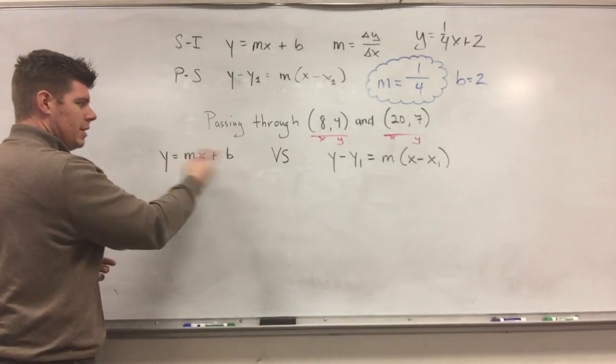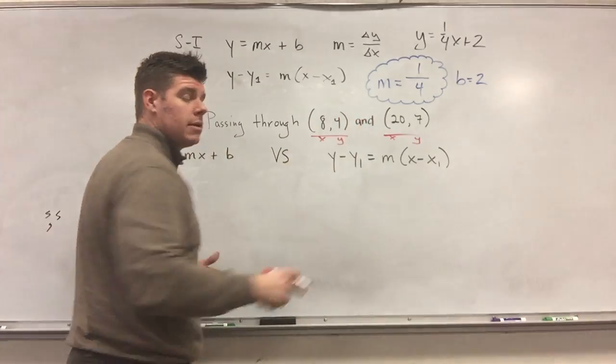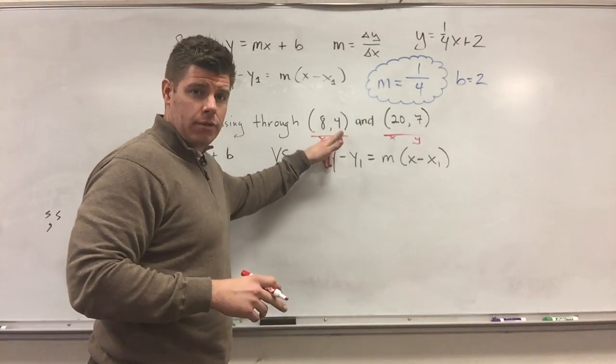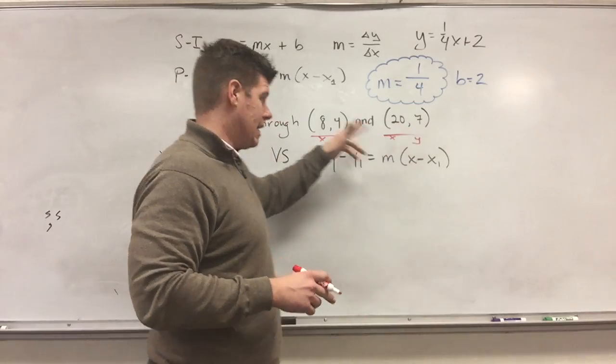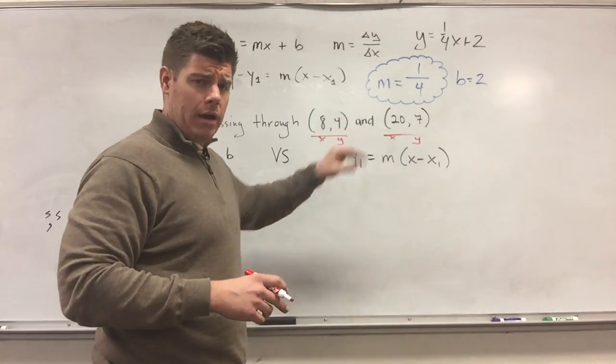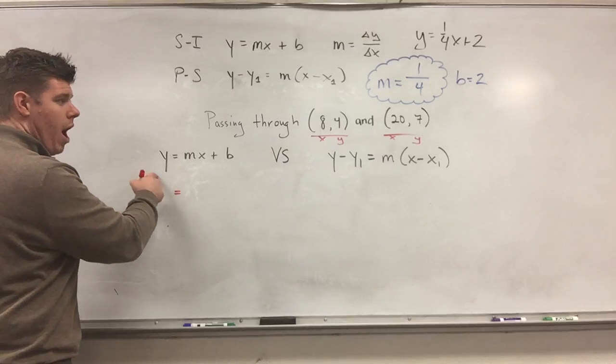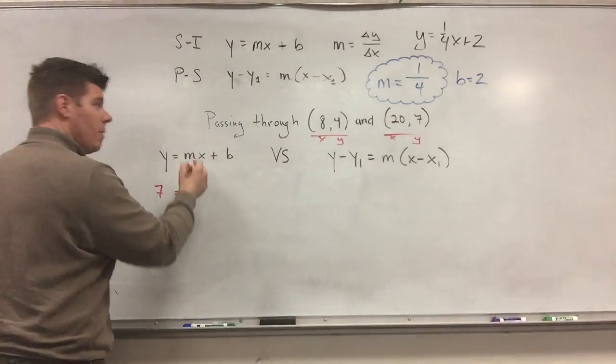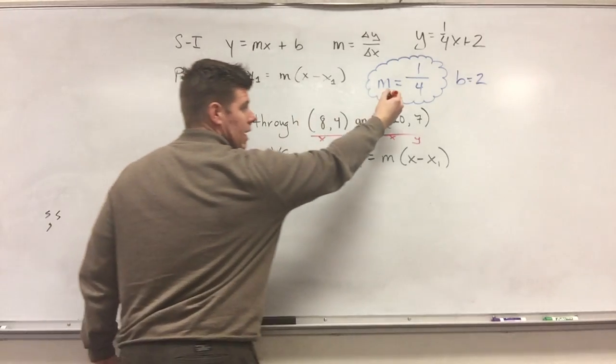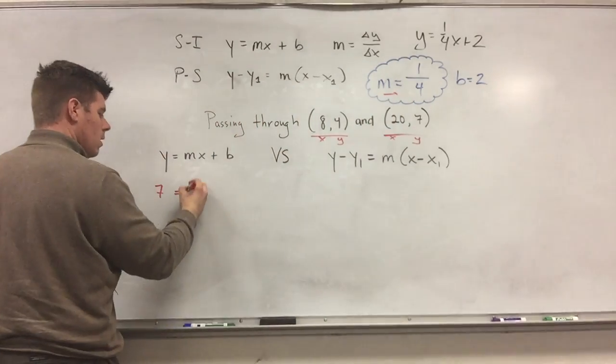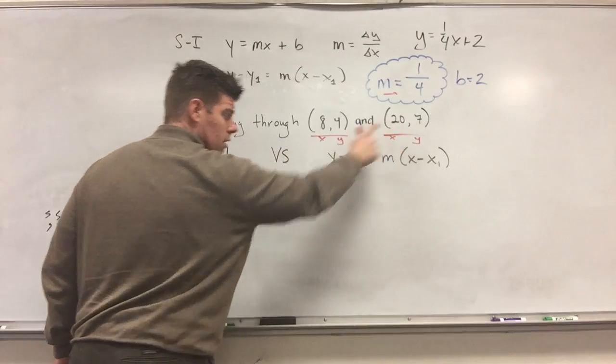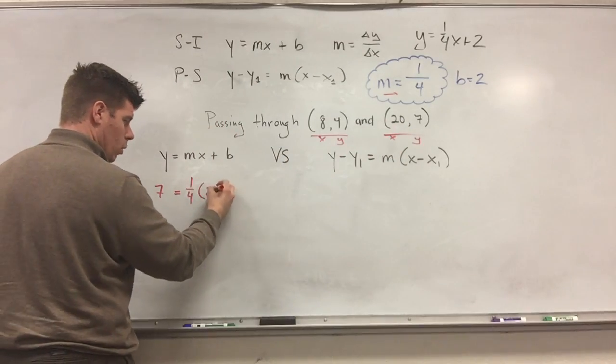So when you do the slope intercept form, to figure this out, we simply plug in the value after I calculate my m. So for this one, it changes to pick any x with its y. So if I pick 8, I have to use 4. If I pick 20, I have to use 7. I can't mix and match here because they're pairs. So if I replace y with 7, that means I'm going to replace that x with a 20.